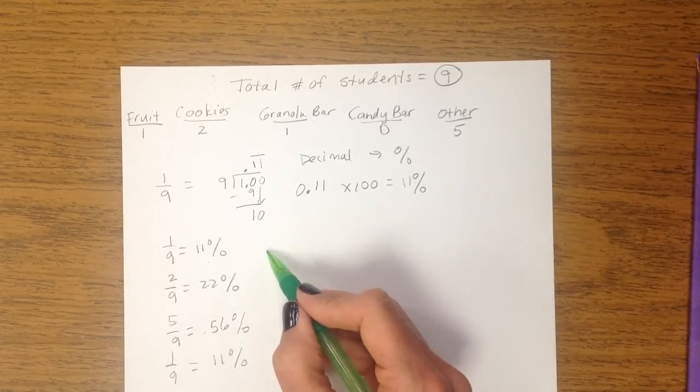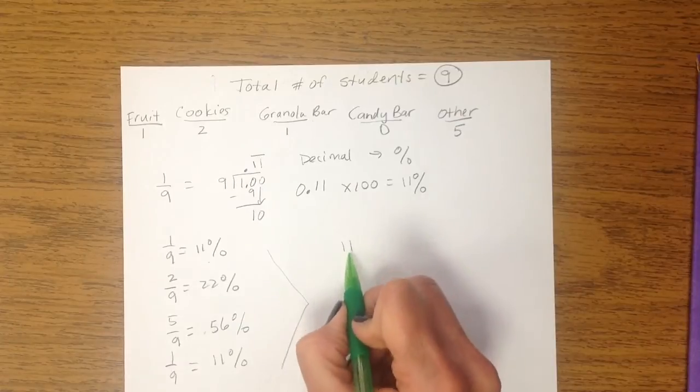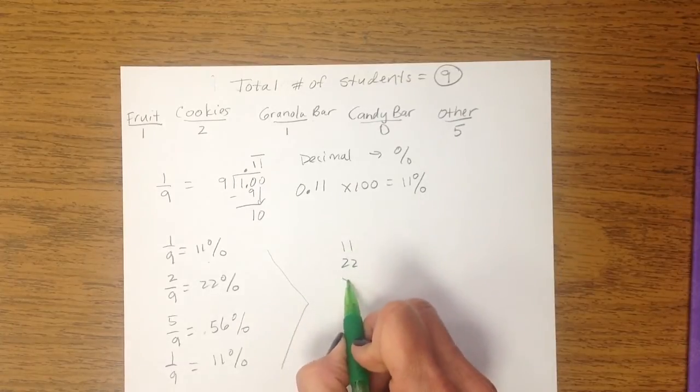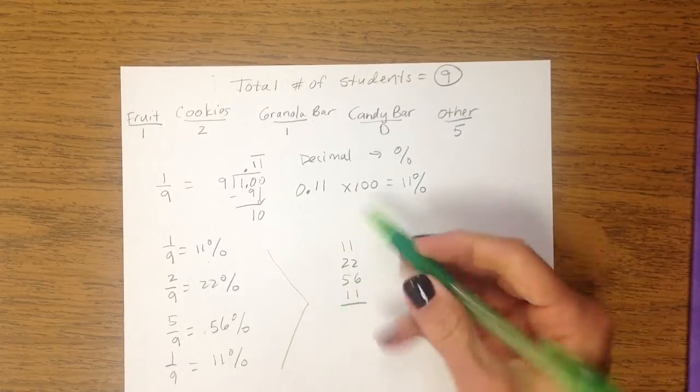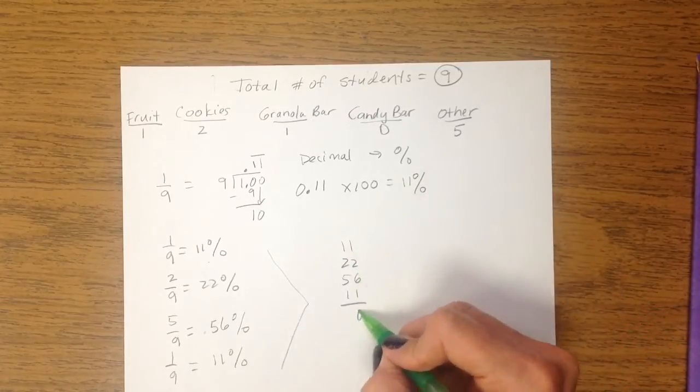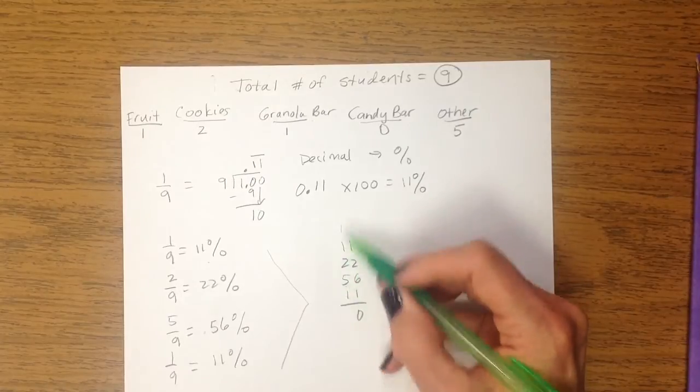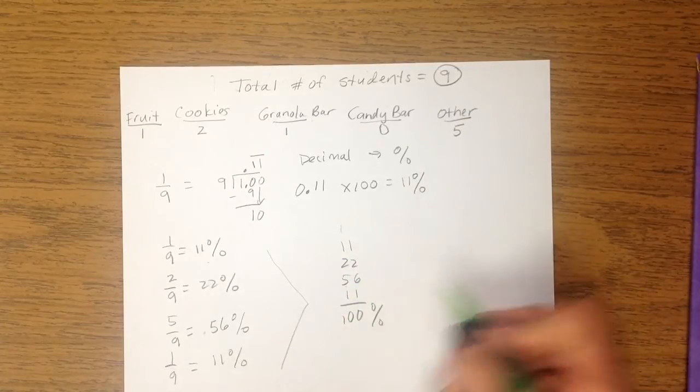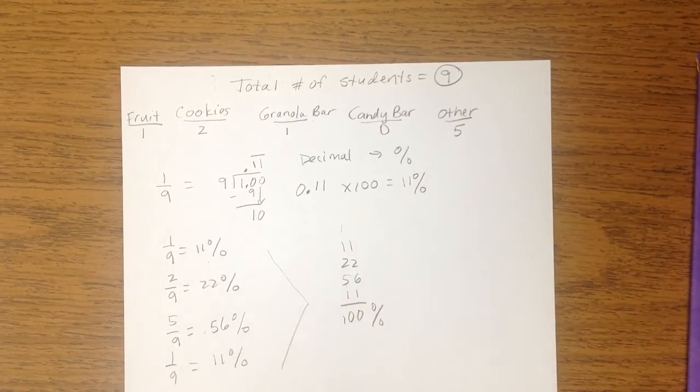And so, first we just want to double-check. If we take those numbers and add them up, do we, in fact, get 100%? So, 11 plus 22 plus 56 plus 11, yes, we get 100%. So, we just made sure, double-checked.